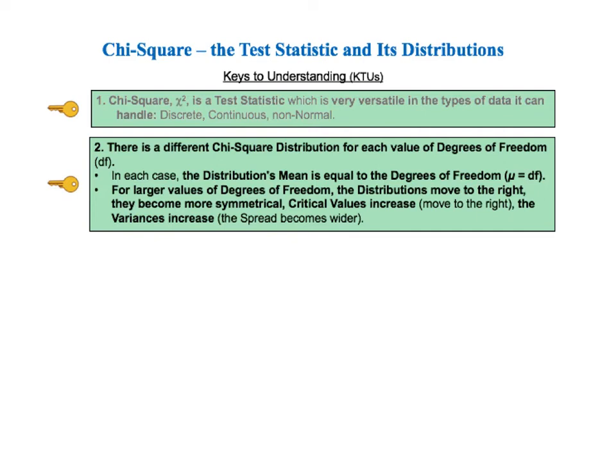The second KTU says there is a different chi-square distribution for each value of degrees of freedom, df. In each case, the distribution's mean is equal to the degrees of freedom, mu equals df. For larger values of degrees of freedom, the distributions move to the right, they become more symmetrical, critical values increase and move to the right, and the variances increase — the spread of the distribution becomes wider.